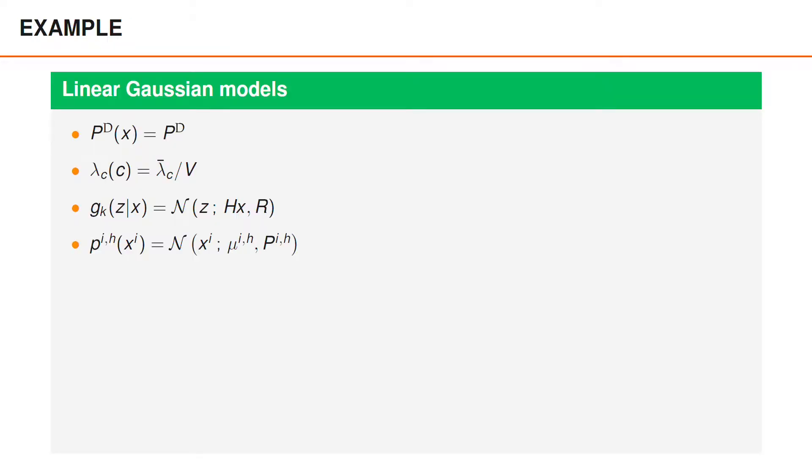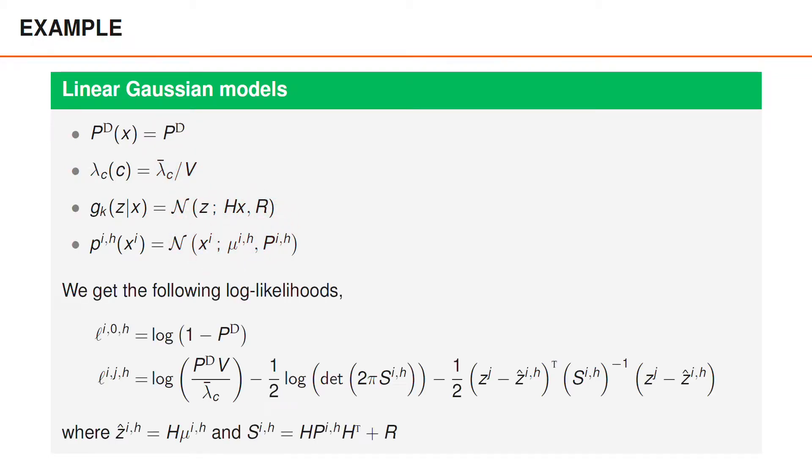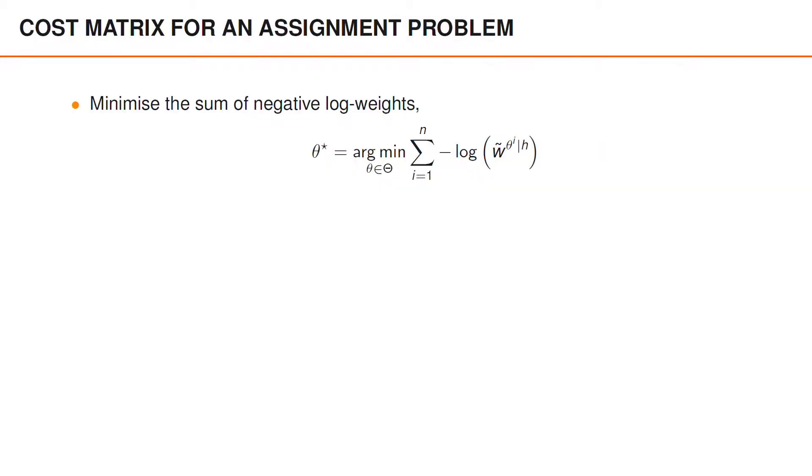If we consider an example with constant probability of detection, uniform clutter, and linear Gaussian models, then we get the log likelihoods shown here. Here Z hat is the predicted detection and S is the innovation covariance.